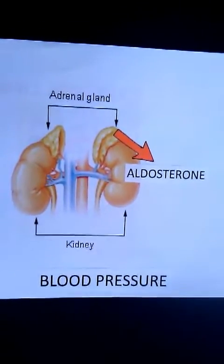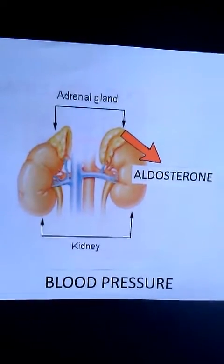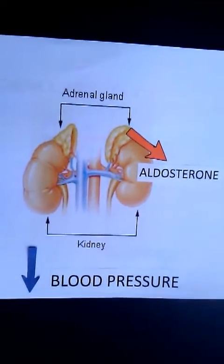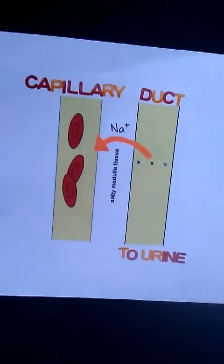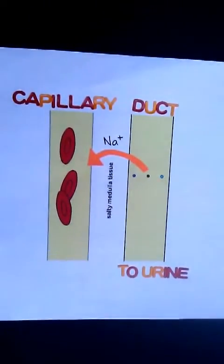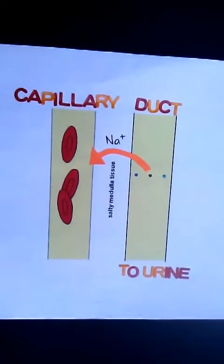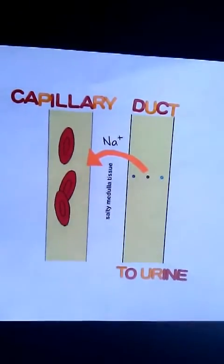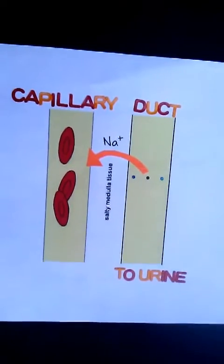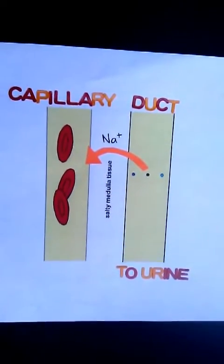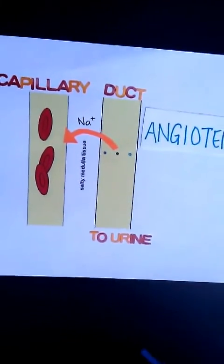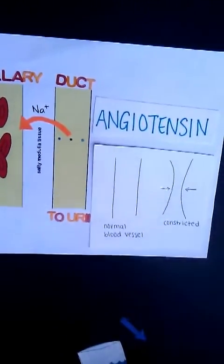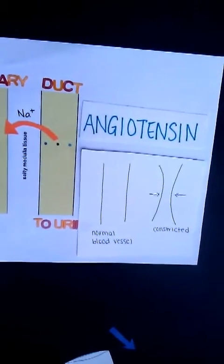Another hormone associated with blood pressure is aldosterone. Low blood pressure in the kidneys, or reduced blood flow to the kidneys, causes a release of aldosterone from the adrenal gland. Aldosterone is released into the bloodstream and stimulates the distal tubes and collecting ducts in the nephron to reabsorb sodium ions into the bloodstream. The sodium ions increase osmotic pressure of the extracellular fluid and therefore increase water reabsorption. Angiotensin, a form of aldosterone, is also released, which causes constriction of blood vessels. Overall, blood pressure is increased and a homeostatic level of balance is reached.